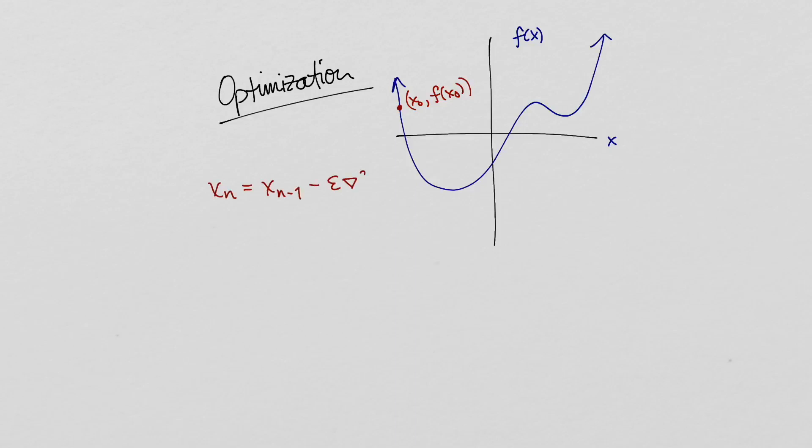The main things we have to decide in implementing this algorithm are how far to step and when to stop. The step length is governed by a parameter called the learning rate. And one common way to determine when to stop is to set a threshold and stop when the norm of the gradient of f goes below it.